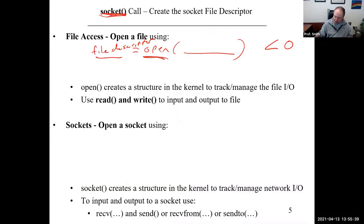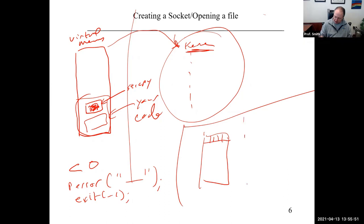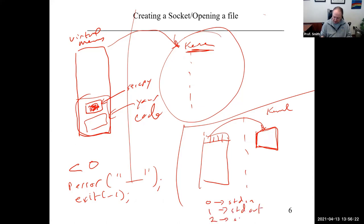Socket returns a file descriptor. File descriptors zero, one, and two are standard in, standard out, and standard error. So if you open a file, the lowest file descriptor you're going to get is three. They said, why don't we use the same idea for sockets — open a socket for a network connection and then read and write to it. That's what they did. The socket call returns a file descriptor, and you check for less than zero since it returns minus one on error.